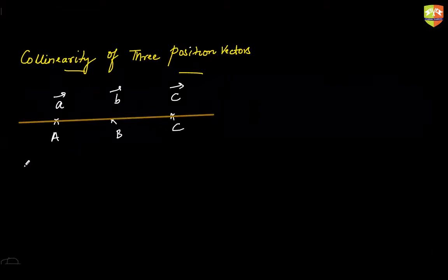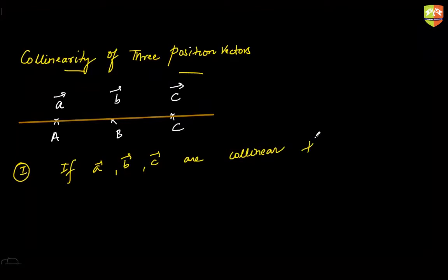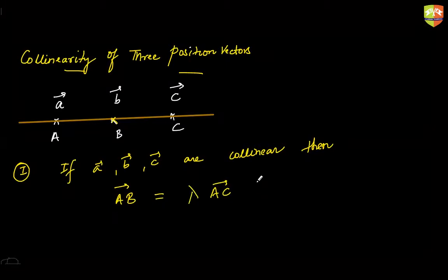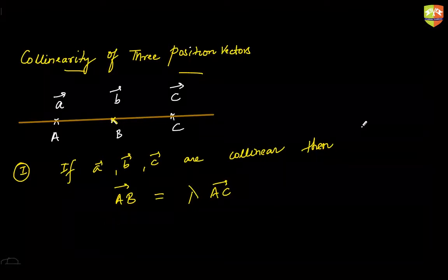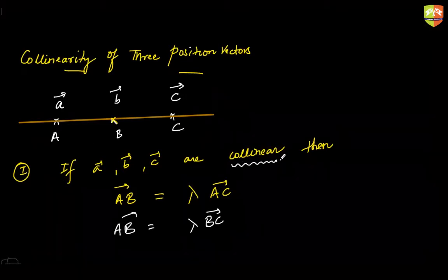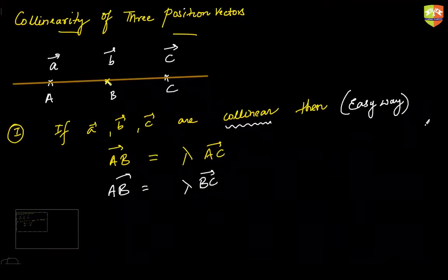There are two ways to check collinearity of three points a, b, c. Method one: construct any two vectors by choosing any two of the points — say vectors AB and AC. Then one can be expressed as lambda times the other. If this condition is satisfied, then points a, b, c are collinear. You can also take AB and BC — if you can express one as lambda times the other, these three points are collinear. This is the easiest method.